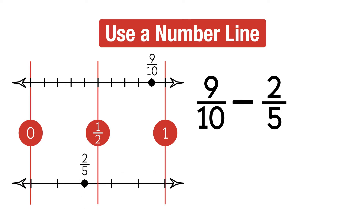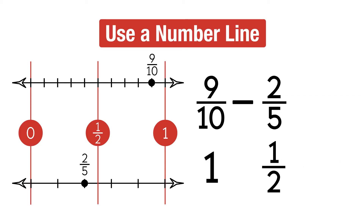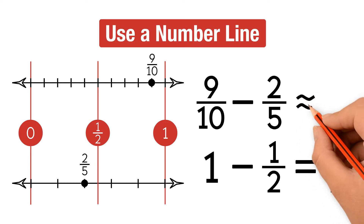Now we estimate. 9 tenths is between half and 1, but it's closer to 1, so we can round up to 1. Next we estimate 2 fifths: it is between 0 and half, but it's closer to half, so we can round up to half. Now we subtract the two rounded numbers: 1 minus half equals half. So 9 tenths minus 2 fifths is approximately 1 half.